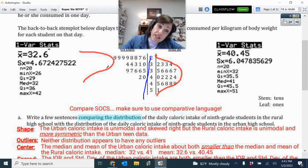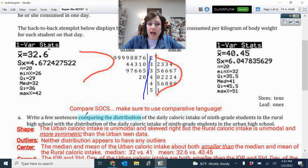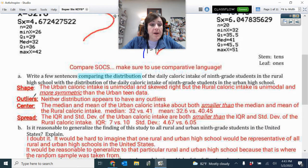So I drew over here on the left this picture of how that looks. So I had written that the urban was unimodal and skewed right and the rural was unimodal and more symmetric than the urban data. So see, that was some comparative language there, more symmetric. There weren't any outliers on either one. The mean and the median were both smaller for the urban.